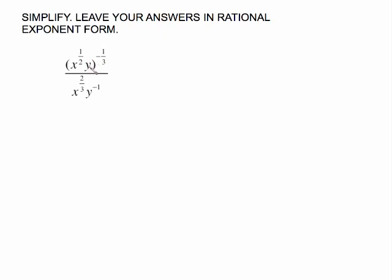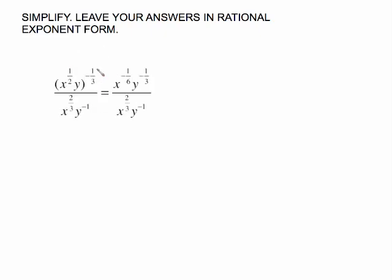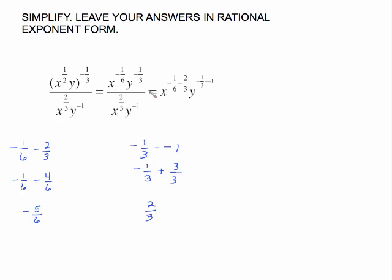With this next problem I'm going to show two different ways. First, I'm going to distribute the negative one-third through the parenthesis on the top, which gives me x to the negative one-sixth, because one-half times negative one-third is negative one-sixth. Then y to the negative one-third, because y to the first times negative one-third is negative one-third. I did nothing to the denominator. Now applying the division exponent law — keep the base and subtract the exponents — negative one-sixth minus two-thirds is what I have for x. Over here I'm going to have y to the negative one-third minus a negative one, because we're subtracting a negative one.